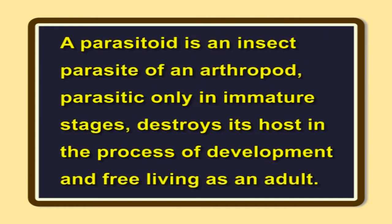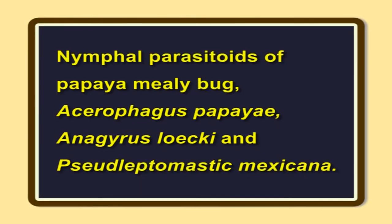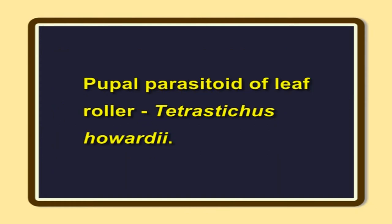Parasitoid. A parasitoid is an insect parasite of an arthropod, parasitic only in immature stages. It destroys its host in the process of development and is free-living as an adult. Examples of parasitoids: egg parasitoid of leaf roller — Trichogramma chilonis; nymphal parasitoids of papaya mealybug — Acerophagus papayae, Anagyrus loecki, and Pseudleptomastix mexicana; pupal parasitoid of leaf roller — Tetrastichus howardii.